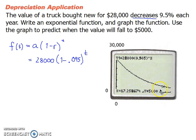And then trace your function until you get to where the y is at about 5,000. And when the y is at about 5,000, it's at 17.3.